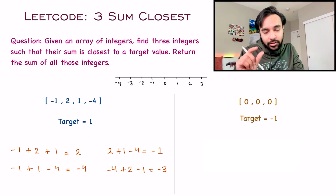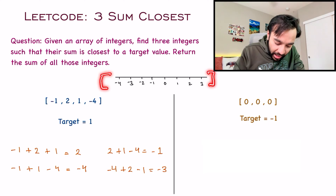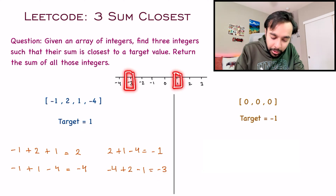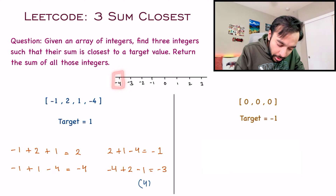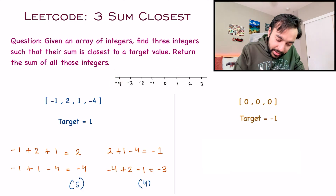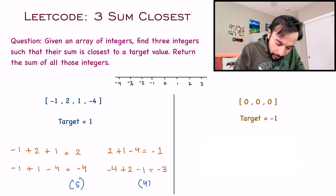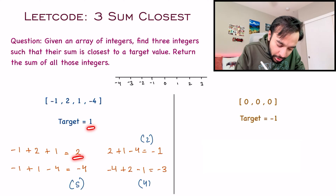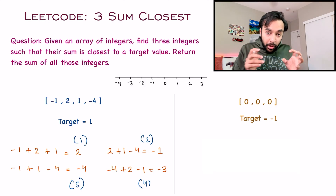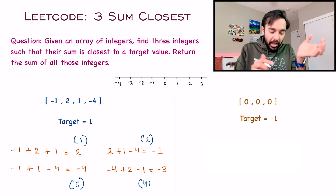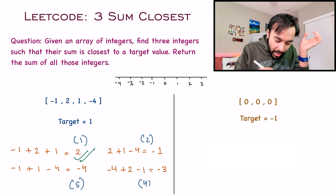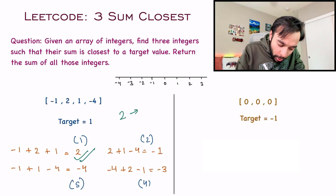To find how close a sum is to the target value, you can look up these numbers on the number line. For example, when you look at minus three and one, the difference is four. When you look at minus four and one, the difference will be five. Similarly, minus one and one will have a difference of two. You will find the minimum difference with the element two and one — that difference is one. So these are the three integers whose sum is closest to my target value, and your answer should be two because you have to return the sum.